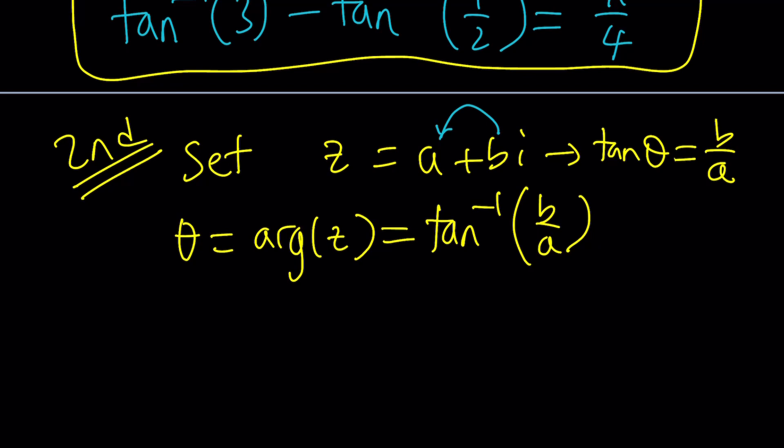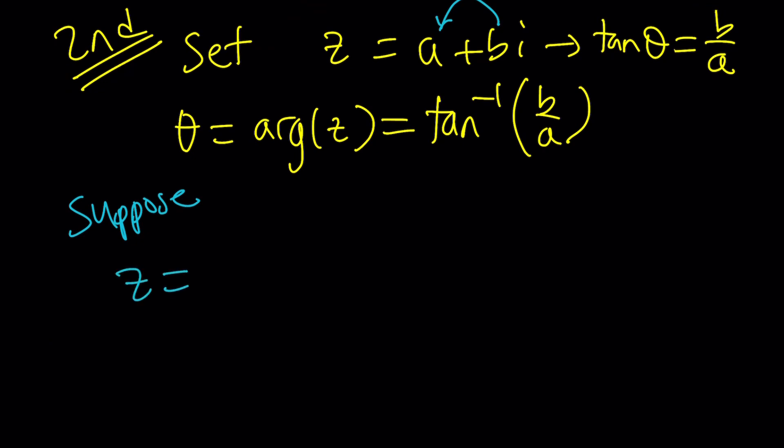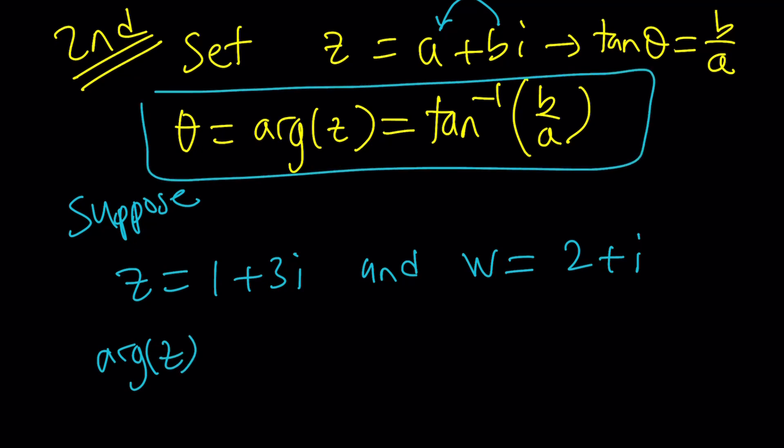Let's see how we can use it in our example. So now we do need two complex numbers whose tangents are 3 and 1 half. So suppose, and you can obviously use different numbers. Suppose z is equal to 1 plus 3i and w, which is another complex number, is 2 plus i. Have you noticed why I picked those numbers? Because if you look at the argument of z and its tangent, you're going to get 3 over 1, which is 3, and you're going to get 1 half for w. Make sense? Yes. So argument of z by this formula is going to be tan inverse of 3. And argument of w is going to be tan inverse of 1 half.